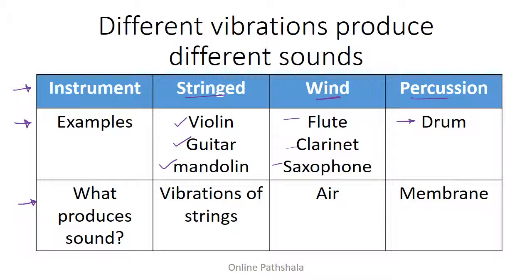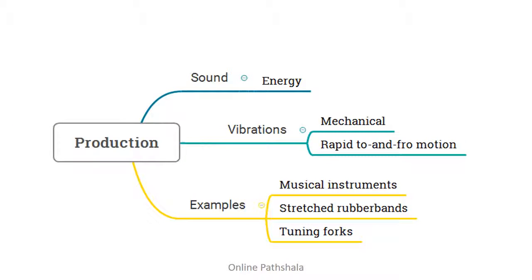An important point from all these different types of instruments is that they produce different kinds of sounds. You can easily differentiate between the sound coming from a guitar and the sound coming from a flute. This tells us that the nature of the vibrations and the material used actually governs the type of sound that is produced. So we've answered our three questions — let's quickly summarize.